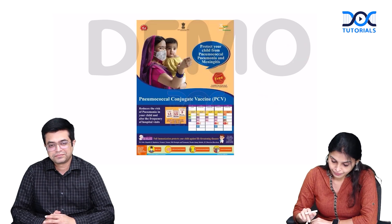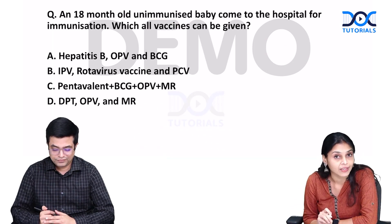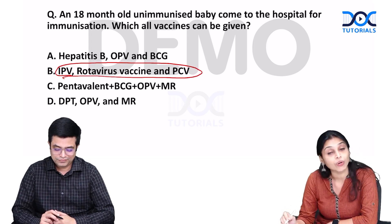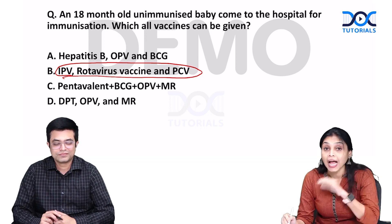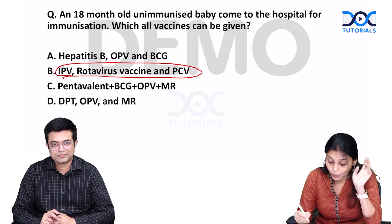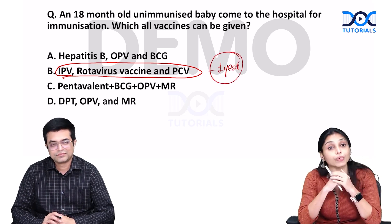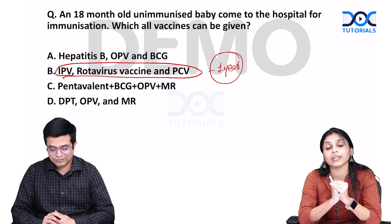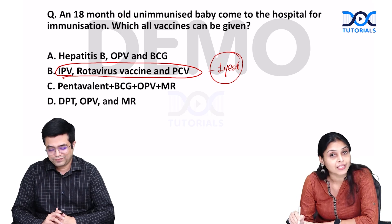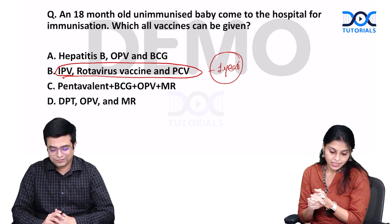The question was whether these vaccines can be given to an 18-month-old. All three — IPV, rotavirus, and PCV — as per the National Immunization Schedule, can only be given up to one year of age. They cannot be given beyond one year. So option B is also not the answer. Moving on to option C — sir, would you like to tell us more about option C?